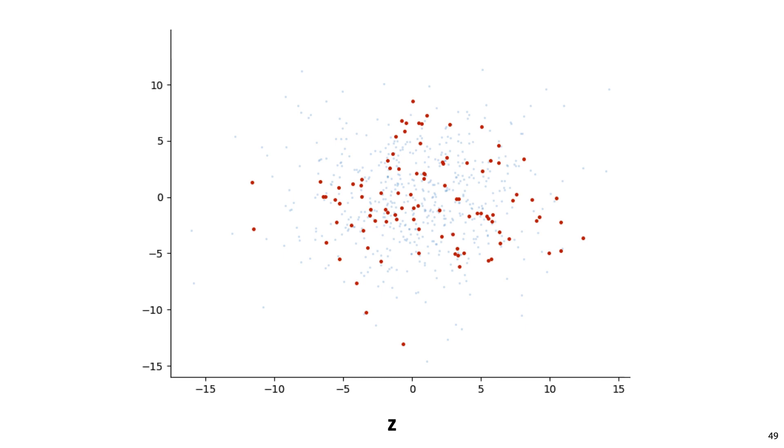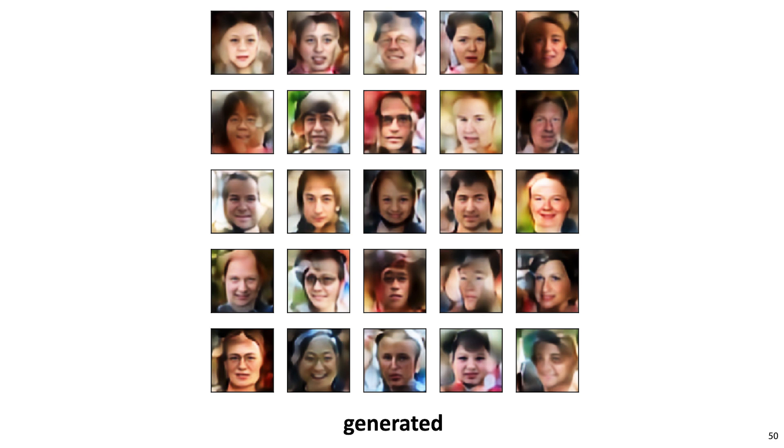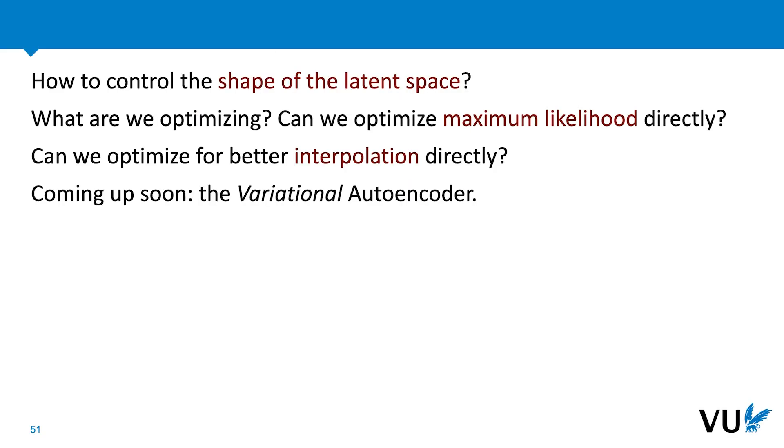If we take these red points and we feed them to the decoder, this is the result. They don't look as good as the reconstructions, but it's clear that we are looking at approximations of human faces. This has given us a generator, but we have little control over what the cloud of representations looks like. We just have to hope that it looks enough like a normal distribution that our normal distribution makes a good fit.